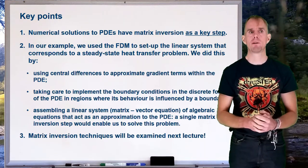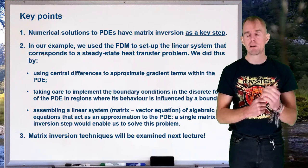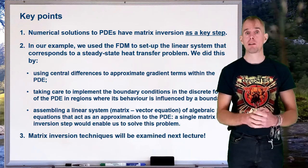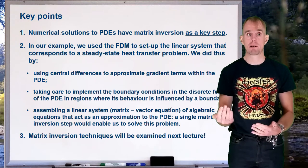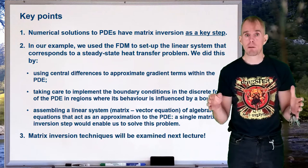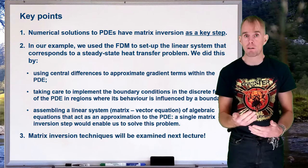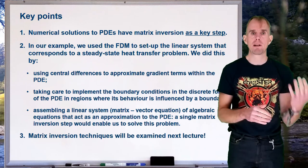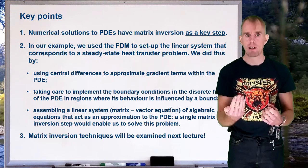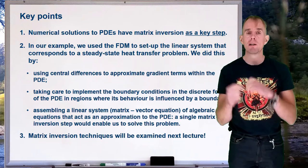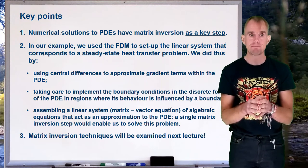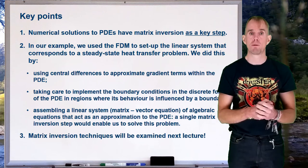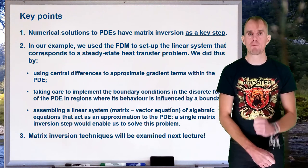To summarise: matrix inversion is a key step in the numerical solution of PDEs. We used finite differencing to set up the linear system, choosing central differencing for second-order accuracy within the bulk domain. We took great care with boundary conditions — the constant temperature BC was straightforward, while the flux BC required a phantom node. A single matrix inversion now solves the problem. Next lecture, we'll look at matrix inversion techniques in detail.